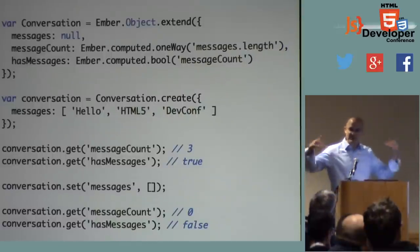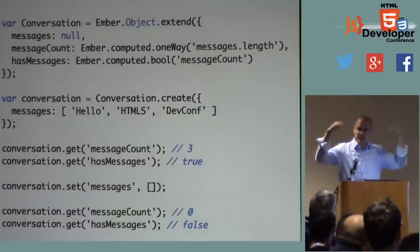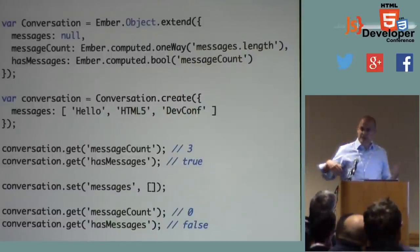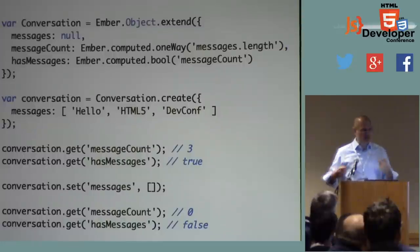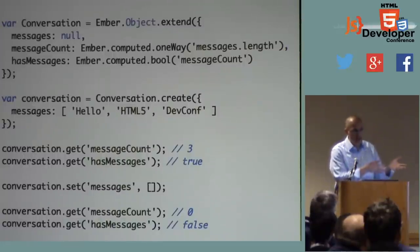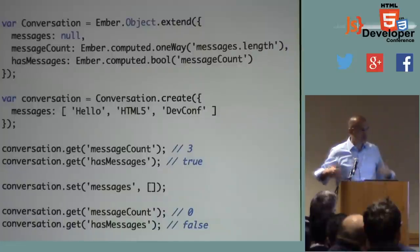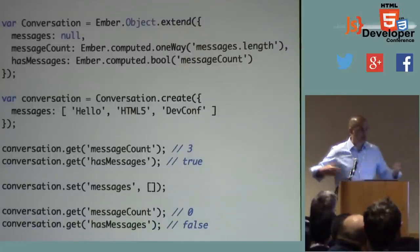So we have these cascading updates. We can change our object directly and these computed properties, which depend on the properties we're changing, will update as well.